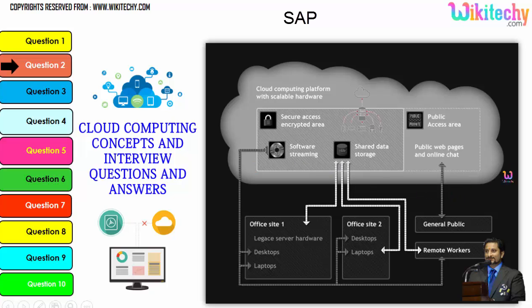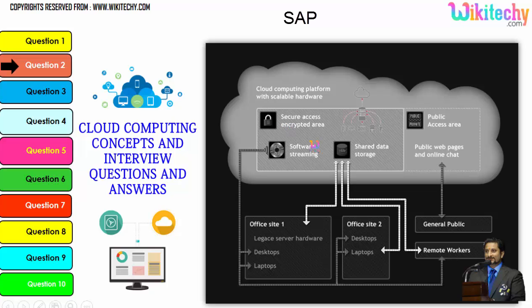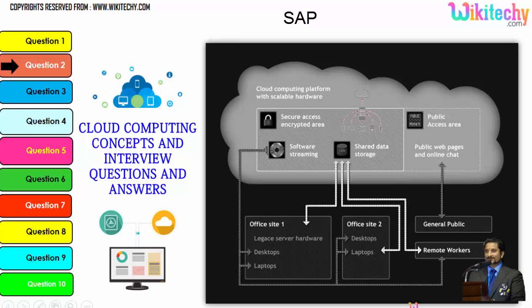Cloud computing has a public access area with public web pages for end users. Apart from this, there is secure data access, shared data storage, and software streaming. Companies can use it as a private kind of cloud, and the public can use it to access web pages or websites. This is how cloud computing works.